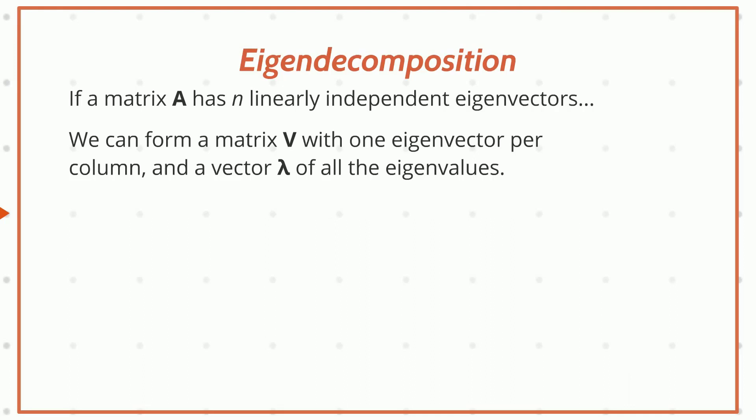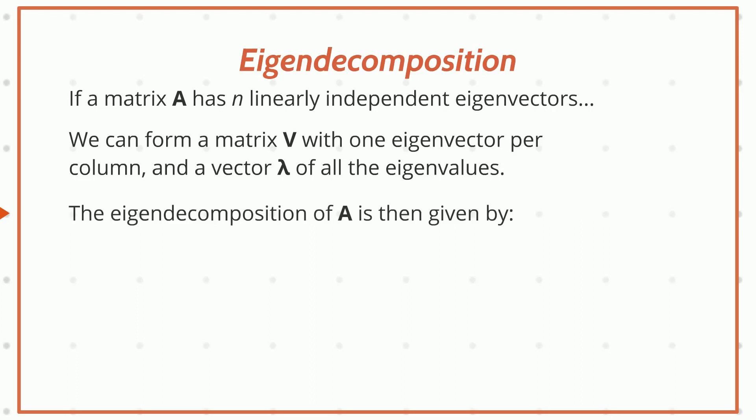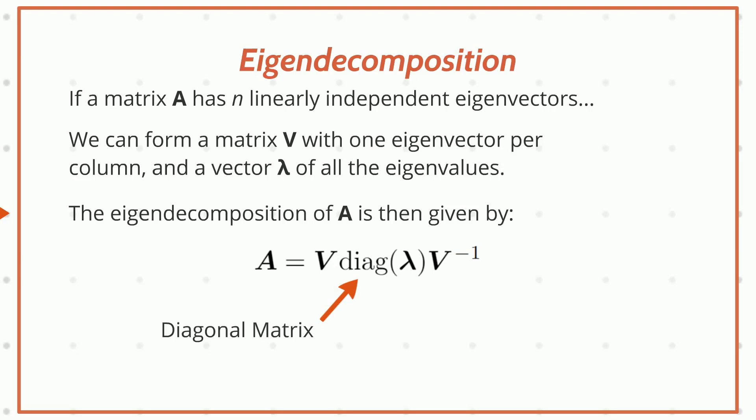If a matrix A has n linearly independent eigenvectors, we can form a matrix V with one eigenvector per column and a vector lambda for all the eigenvalues. We can then find the eigendecomposition of A using the following equation: matrix A equals V — where V is a matrix with one eigenvector per column — multiplied by a diagonal matrix constructed from all of the eigenvalues, multiplied by the inverse of the eigenvector matrix. This equation is how you find the eigenvectors and eigenvalues, and it is a great way to break apart a matrix into its constituent parts.